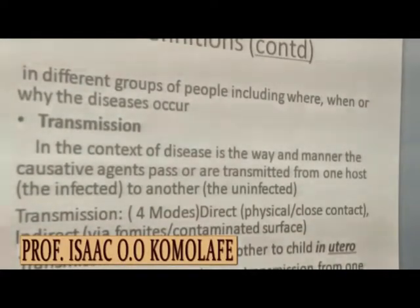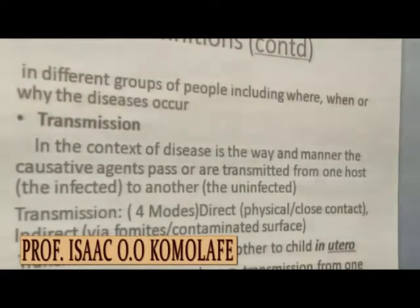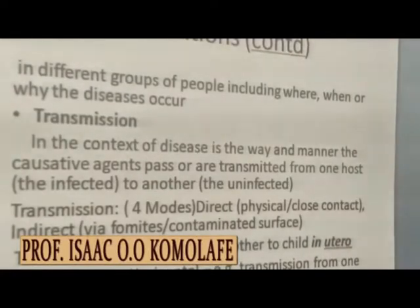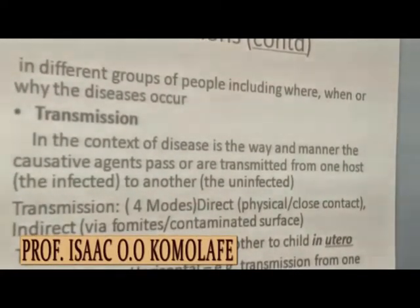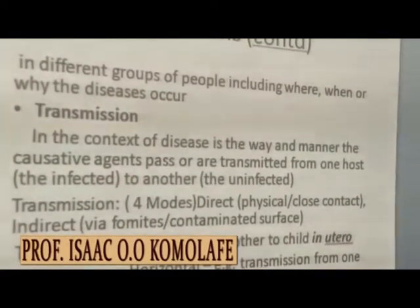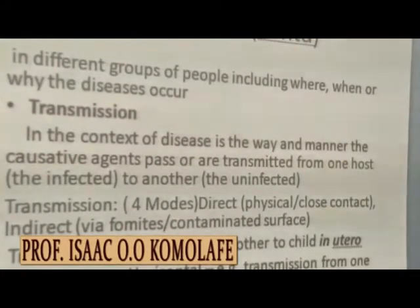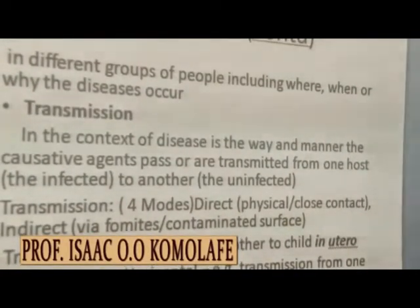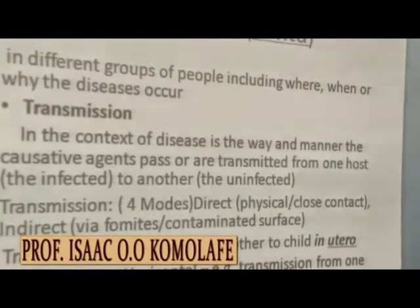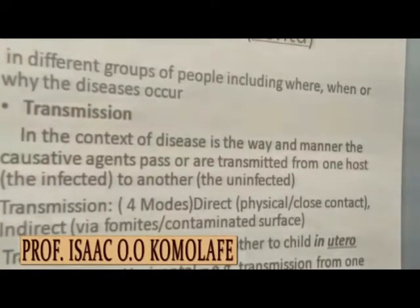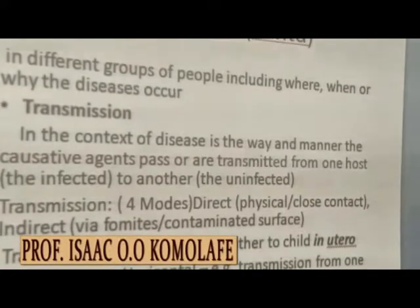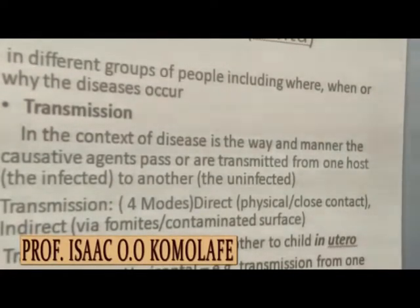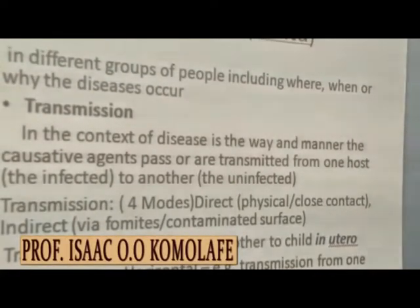Transmission, in the context of disease, is the way and manner the causative agents pass or are transmitted from one host — the infected — to another — the unaffected. Transmission can occur in four different ways: it could be direct, in which case there is a physical contact between the infected and the unaffected — in the case of HIV, sexual activity is a physical contact. It can also be indirect, that is, transmission via fomites. Fomites are inanimate objects like syringes and needles that are contaminated, or contaminated surfaces. HIV can be transmitted through infected needles and syringes.